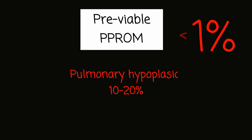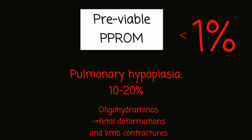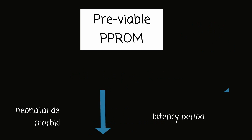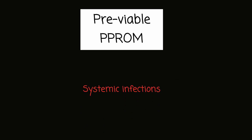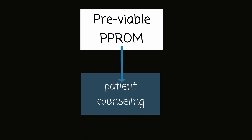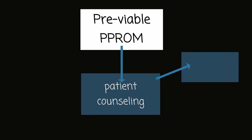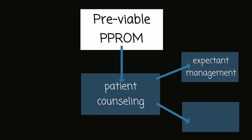Pre-viable PPROM is rare, occurring in less than 1% of pregnancies. There are important risks of prematurity to discuss with this population. Pulmonary hypoplasia rates are approximately 10–20%, and prolonged oligohydramnios can cause fetal deformations and limb contractures because the fetus cannot move freely within the amniotic sac. Neonatal death and morbidity rates decrease with a longer latency period and advancing gestational age. There are also significant maternal complications that can occur with prolonged rupture of membranes, with increased risks of systemic infections. The management for patients with pre-viable PPROM involves patient counseling and expectant management or induction of labor. Antibiotics and corticosteroids are not recommended before viability.